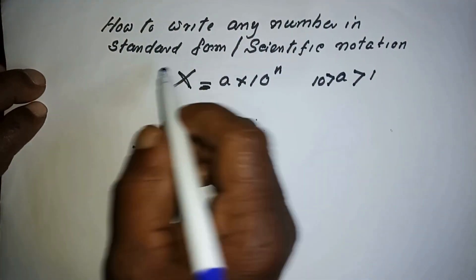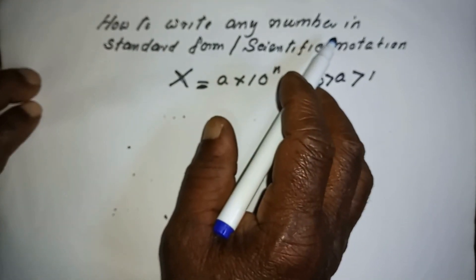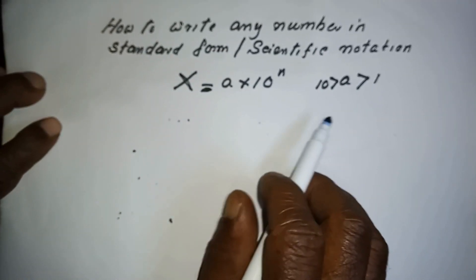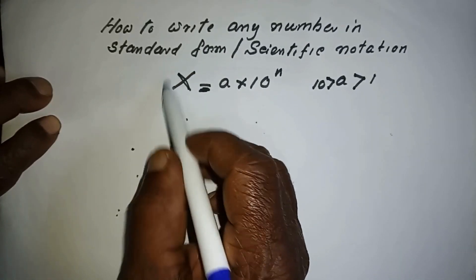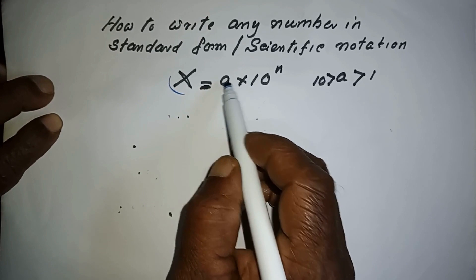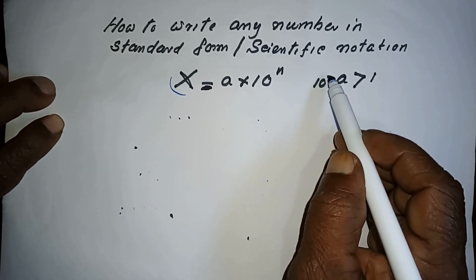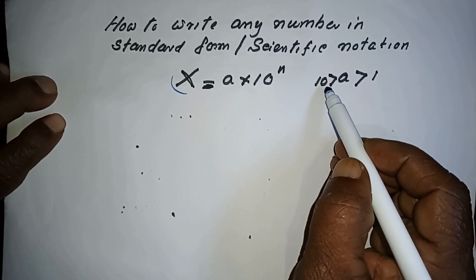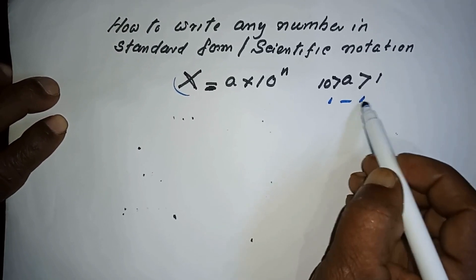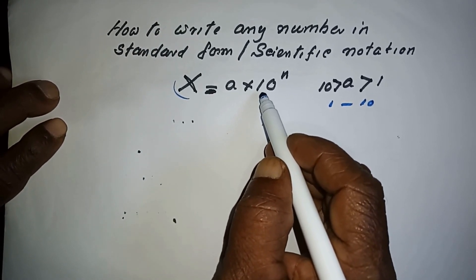How to write any number in standard form or scientific notation. Writing a number in scientific notation and writing it in standard form mean the same thing. You have to write that number as a product of two numbers. The first number should be greater than 1 and less than 10 — in other words, a number between 1 and 10.